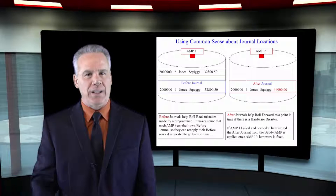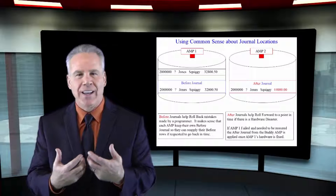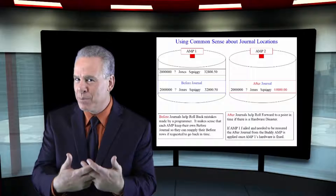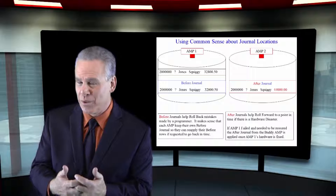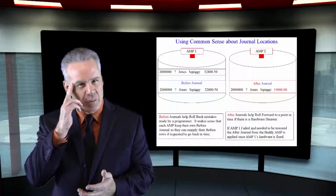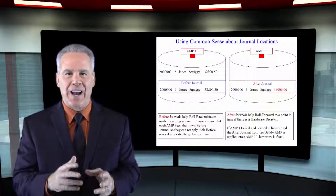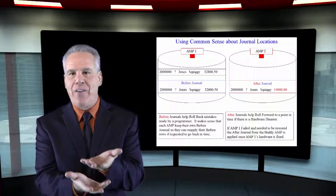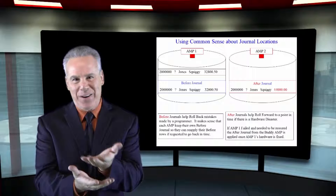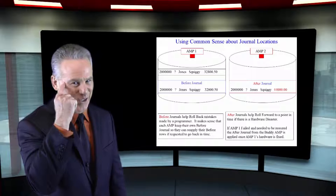Logically, it does make sense. We have a before journal stored permanently in case the programmer was told, I want you to give them a 10% raise, not a 100% raise. It's a programming mistake — a logical mistake, not a hardware failure. So we can roll back in time, and we might as well keep it on the same amp that had the change, because it's not a hardware issue, it's not a failure issue. It's a mind failure issue.